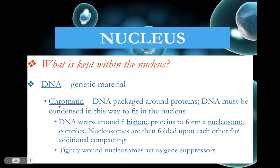DNA is held inside the nucleus and is packaged as chromatin around proteins called histones. When DNA wraps around histone proteins, it forms a structure known as a nucleosome. If these nucleosomes are very tightly wound, that will prevent a gene from being used — if a gene is there to produce a certain protein and it's tightly wound, that protein won't be made. So tightly wound nucleosomes act as gene suppressors.